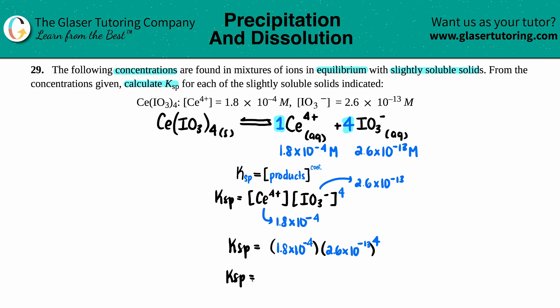Ksp equals — let's see — 2.6 times 10 to the negative fourth, and I get 8.2 times 10 to the negative 55. This one is really slightly soluble! That basically means that none of this is going to break down — it's mainly going to be all solid. That's why the IO3- concentration is so small.